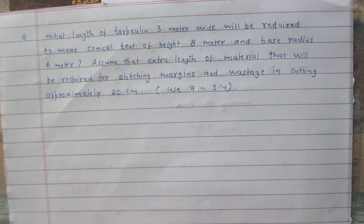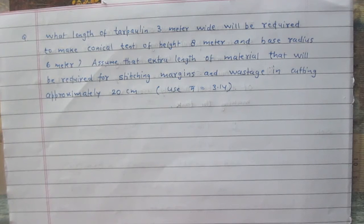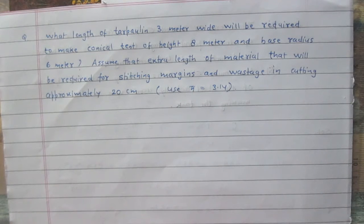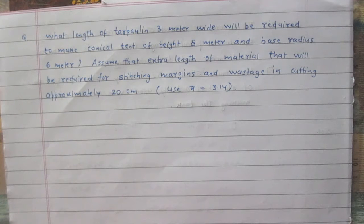In this question, we are given dimensions of a conical tent. We are also given a tarpaulin cloth of some unknown length and 3 meter breadth. We are informed that this tarpaulin cloth is used in making this tent, and some length of it is used as extra. We are supposed to calculate the total length of this tarpaulin cloth used in making this tent.